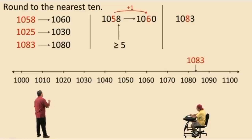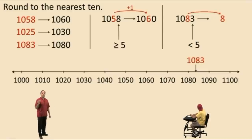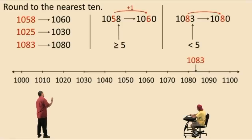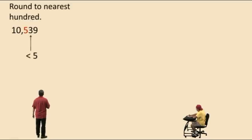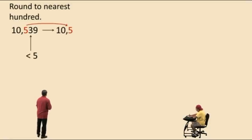For 1083, the 8 is in the tens place, so we look to the digit to the right, which is 3. Since 3 is less than five, the digit in the tens place remains unchanged — stays an 8. We bring the numbers in front and replace the numbers to the right with zero: answer is 1080. Now for rounding to the nearest hundred, the 5 is in the hundreds place. The digit to the right is 3 — less than five — so the 5 remains unchanged. Bring out the numbers in front, replace digits to the right with zeros.